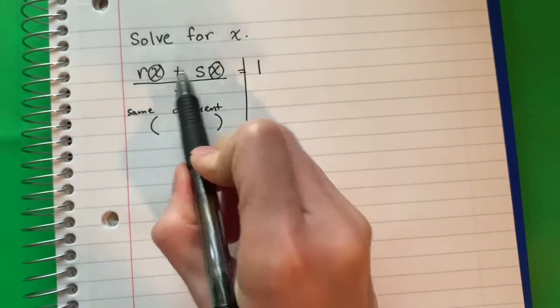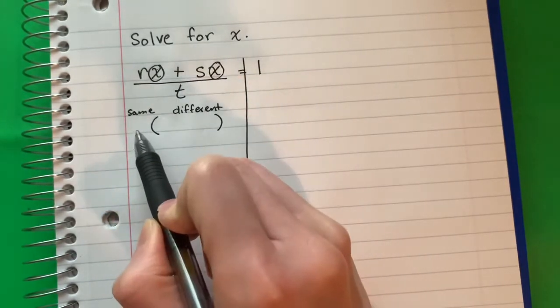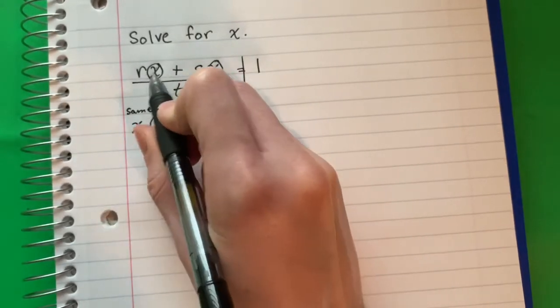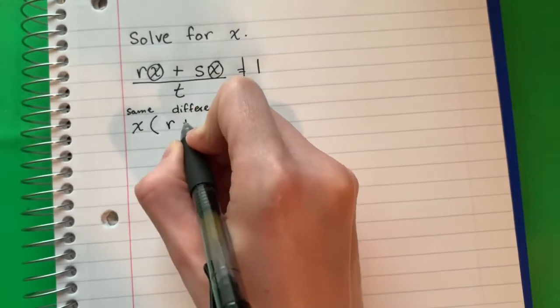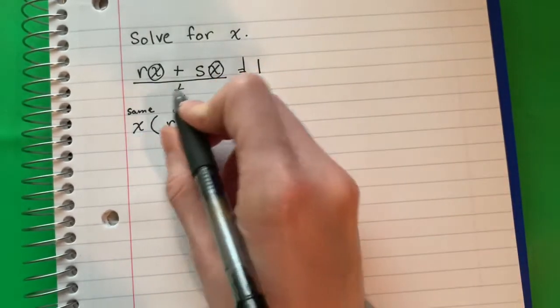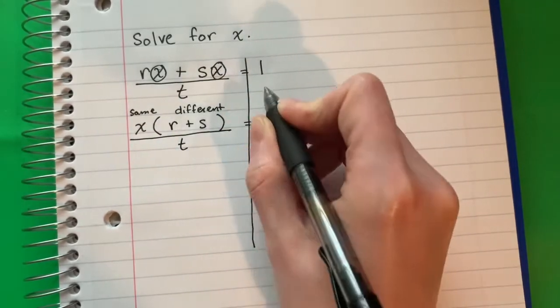So what is the same up here? x and x. So I'm going to put x on the outside. What is different up here? r plus s. So r plus s and I will do divided by t. Copy equals 1.